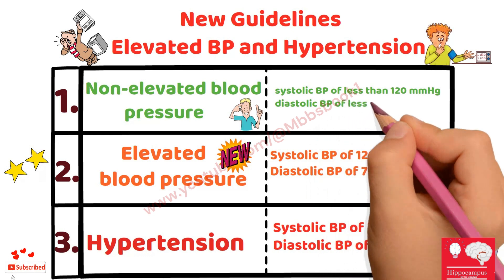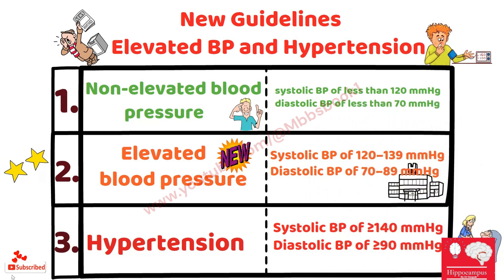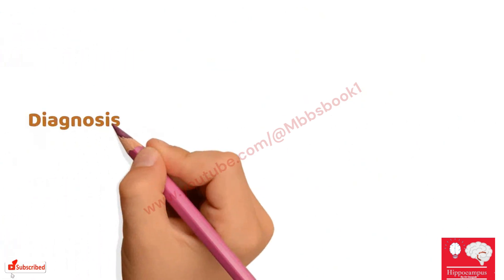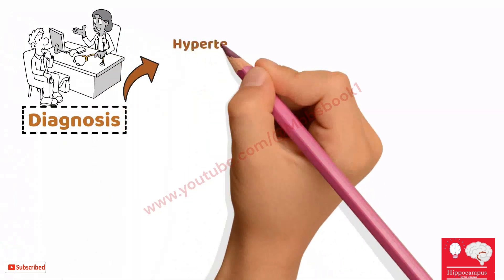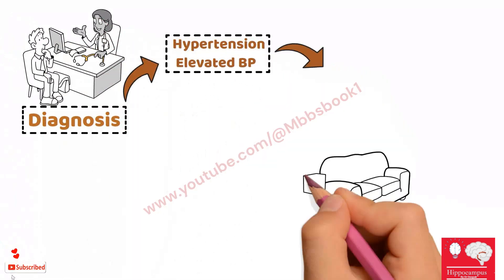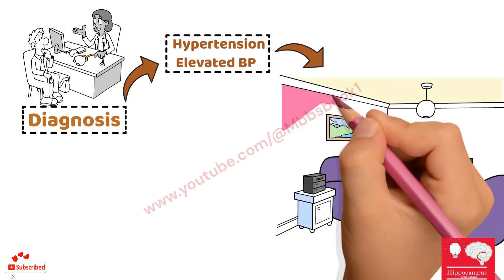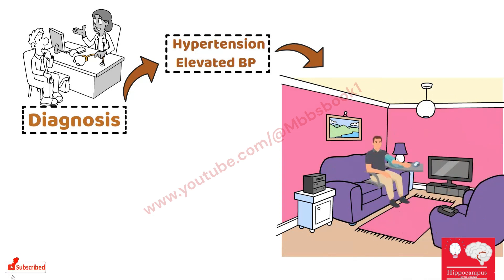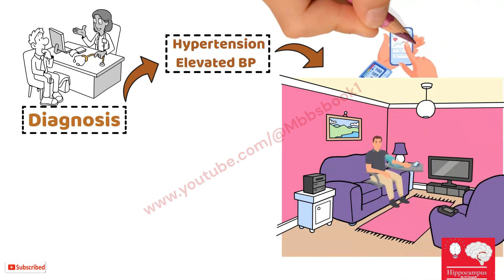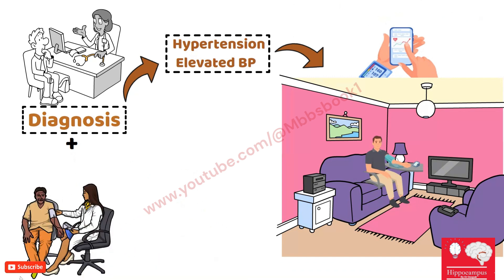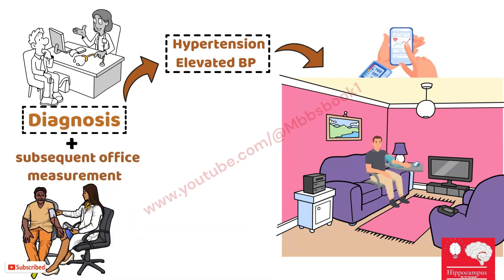The diagnosis of hypertension and elevated blood pressure requires confirmation using out-of-office measurement — that is, home blood pressure monitoring or ambulatory blood pressure monitoring, or at least one additional subsequent office measurement.